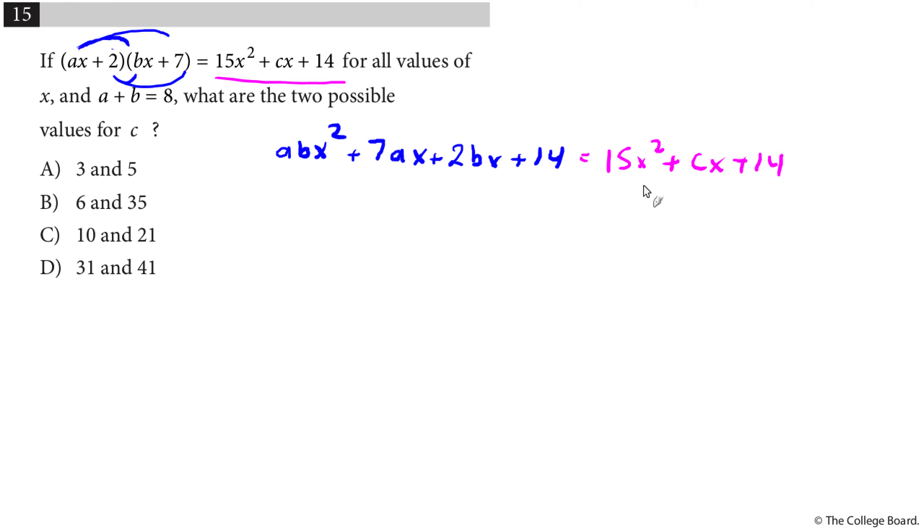Now we want to figure out what the two possible values for c are. So in here, if I go through this, I know that this is abx squared. I can sort of combine like terms, but this is 7a, this is 2b. Really, I'm just going to sort of take the x out of there and see that this middle term would be 7a plus 2b all times x. And now I'm just going to line up and see that I want ab to be 15. I also want a plus b to equal 8.